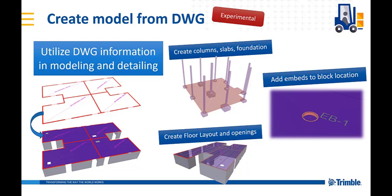This is very common — for example, you may have electrical reservations in the DWG as a block, so now you can add the correct embed to the precast unit by just utilizing the block name and location. This is a huge productivity gain to create the embeds with one pick in a project where you have hundreds of these embeds to place according to the DWG. This is also the reason why the tool was experimented with in the first place.